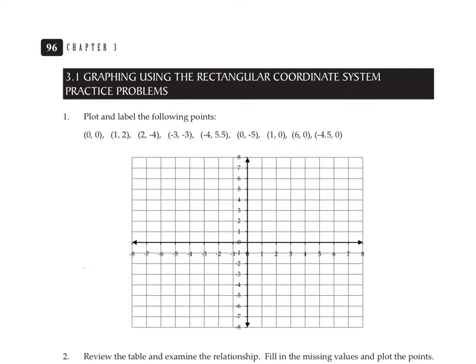Okay, we're doing some practice in section 3.1, graphing in the rectangular coordinate system, starts on page 96 of your book. The first question says plot and label the following points. These are ordered pairs that refer to points on the rectangular coordinate system.